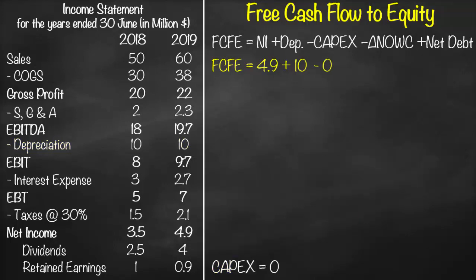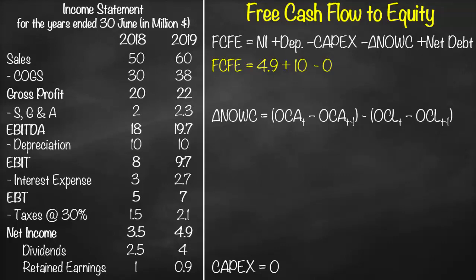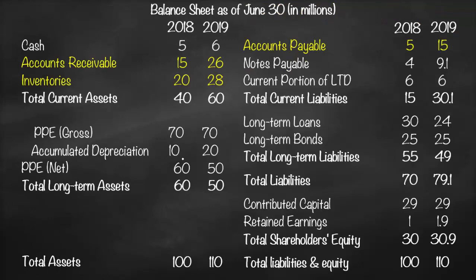Next we calculate the change in net operating working capital. The formula is: operating current assets this year minus the previous year, minus the change in operating current liabilities (operating current liabilities this year minus the previous year). We look at the balance sheet and choose operating current assets and operating current liabilities. 'Operating' means items used directly in operations — they do not incur interest or a return.